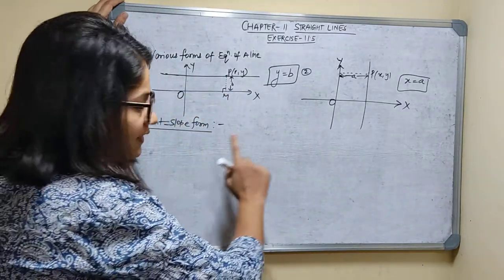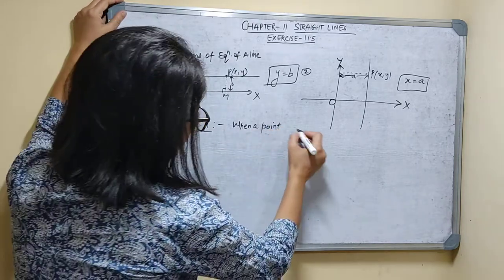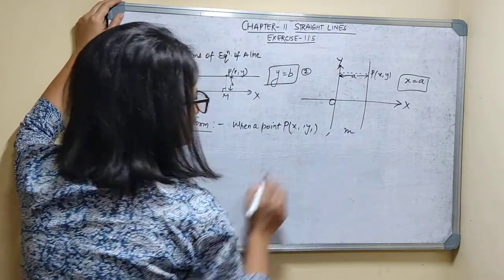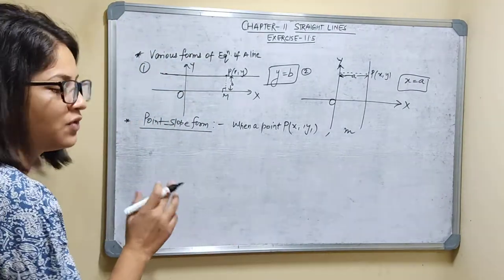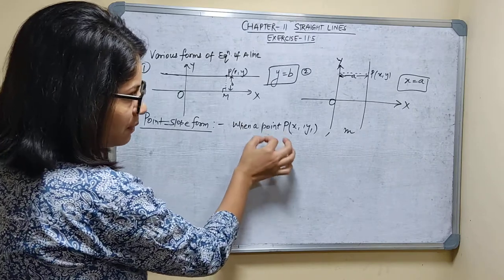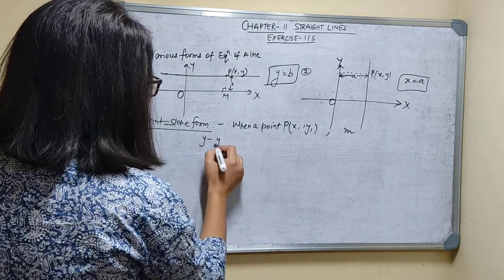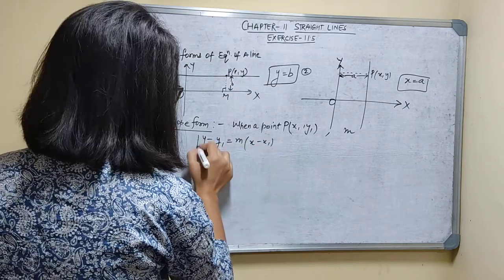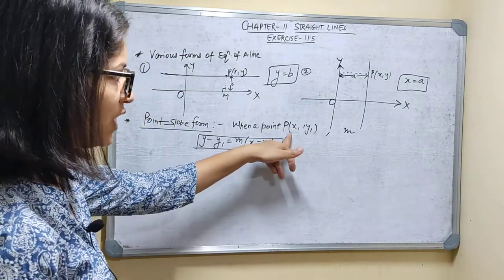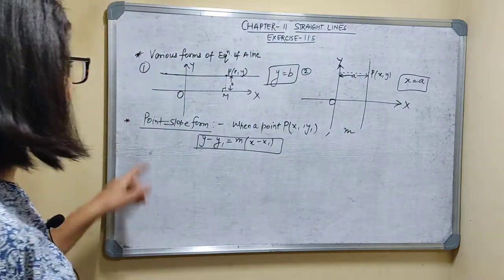Point Slope Form: You have to find the equation of a straight line when one point is given — let's say P(x1, y1) — and the slope m is given. The equation will be y minus y1 is equal to m times x minus x1. This is the equation of a straight line passing through point P with coordinates (x1, y1) and slope m.